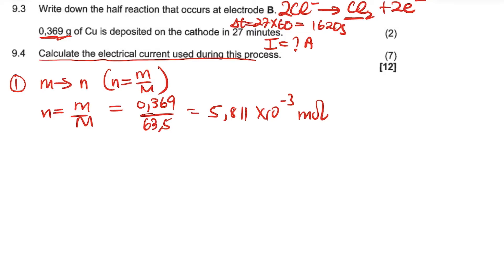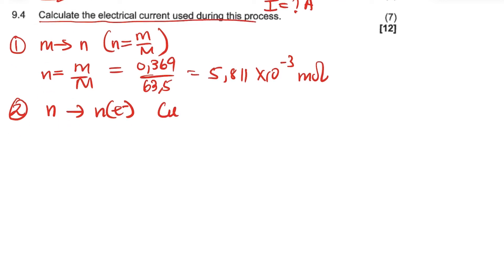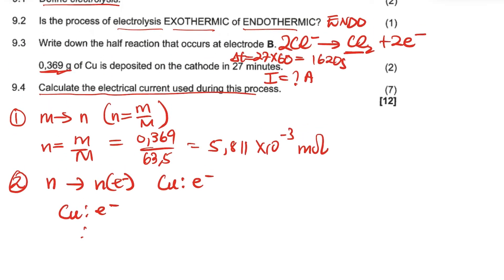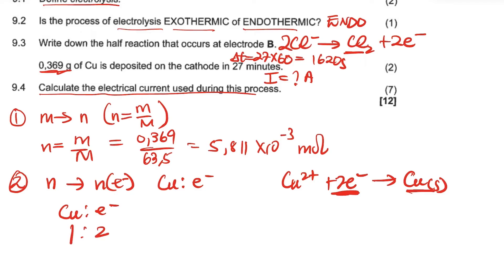Step 2: convert moles of copper to moles of electrons. The half-reaction for copper reduction is: Cu²⁺ + 2e⁻ → Cu(s). So the ratio of electrons to copper is 2:1 — two electrons per one copper atom.